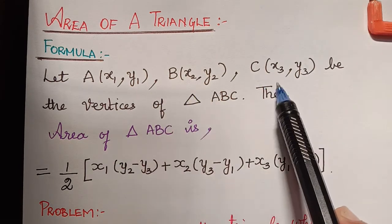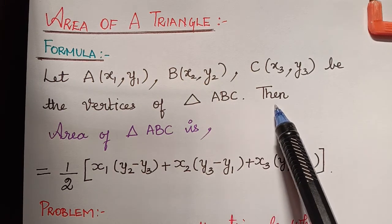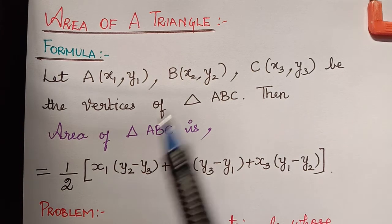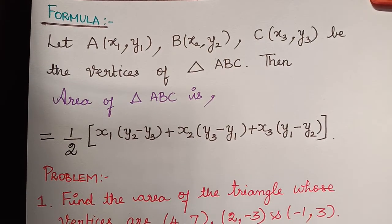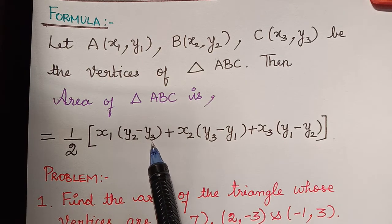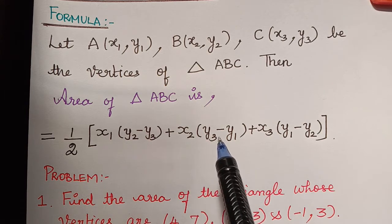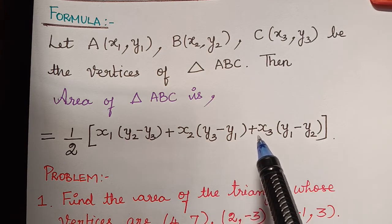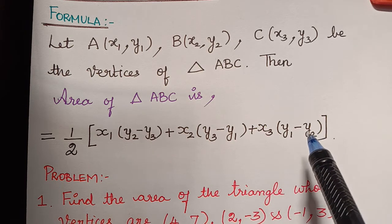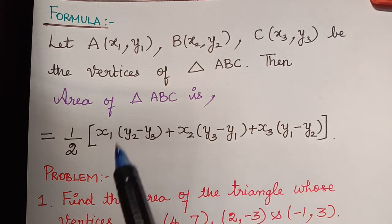These are the coordinates of the vertices of triangle ABC. The area of triangle ABC is given by the formula: 1/2 of x1 multiplied with (y2 minus y3), plus x2 multiplied with (y3 minus y1), plus x3 multiplied with (y1 minus y2). Now let us do a problem on this topic.